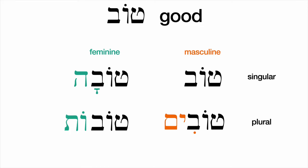We have four different forms for any adjective depending on whether it's masculine or feminine and whether it is singular or plural. Of paramount importance is to begin memorizing these endings: im for plural masculines, ot for plural feminines, ah for feminine singulars. The masculine singular form is usually unmarked — it doesn't have anything added; it's the form we memorize to begin with.